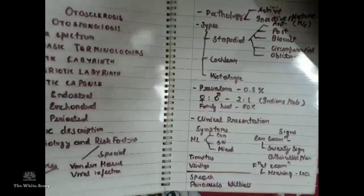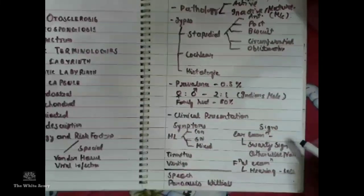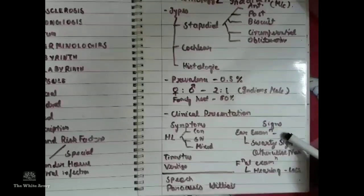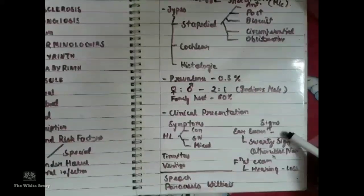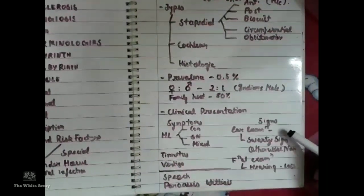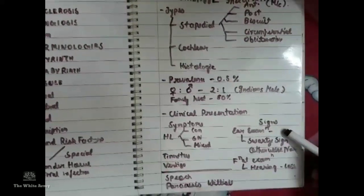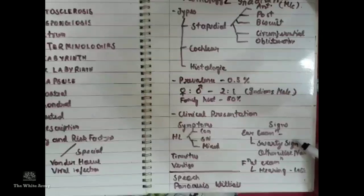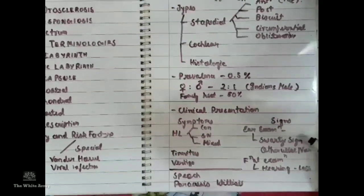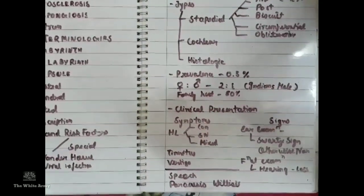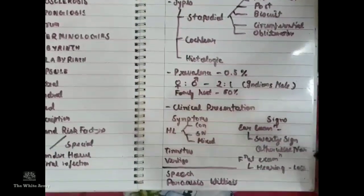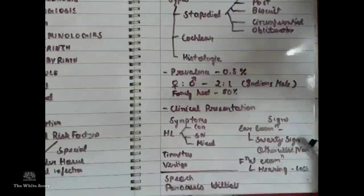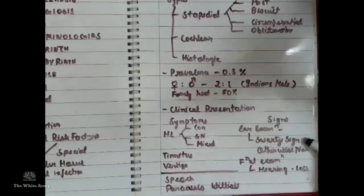Regarding signs: on ear examination, it should be normal. However, in active disease with increased proliferation and vascularity, there will be a Schwartze sign — the promontory shows increased redness and a pinkish tint that can be observed from outside, also known as the flamingo pink sign. This is indicative of active disease.